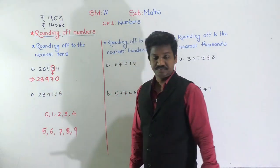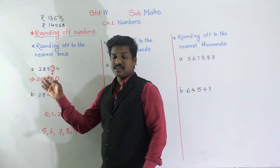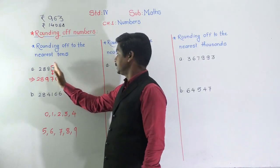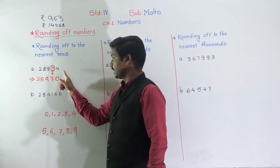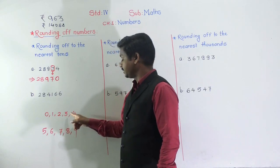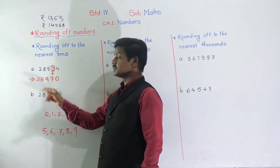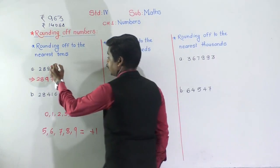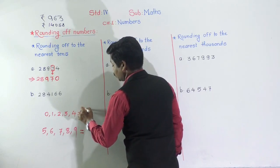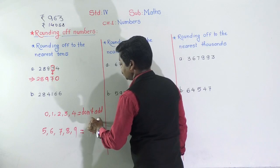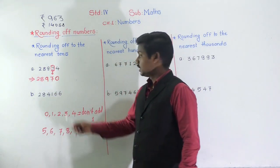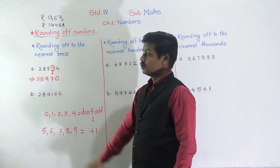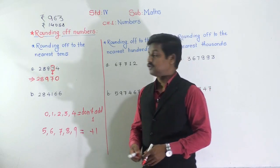Let me repeat the process. First, underline or circle the tens place digit. Then see the next digit — here it is 4. According to the rule, if the next digit is 0, 1, 2, 3, or 4, take the tens place digit as it is. If the next digit is 5, 6, 7, 8, or 9, add 1 to the tens place. Here there is 4, so we don't add 1 — we write 7 as it is, put 0, and keep the remaining digits: 28,970.